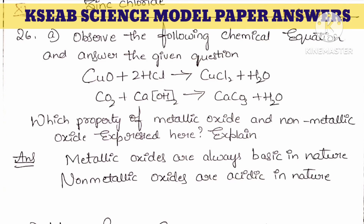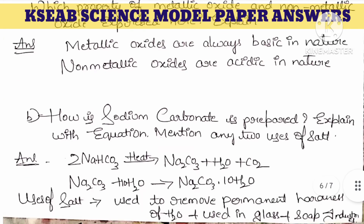Next question: observe the following chemical equations — copper oxide combines with hydrochloric acid to form copper chloride and water; carbon dioxide combines with calcium hydroxide to form calcium carbonate and water. What property of metallic oxide and non-metallic oxide is expressed? Metallic oxides are always basic in nature, whereas non-metallic oxides are acidic in nature.